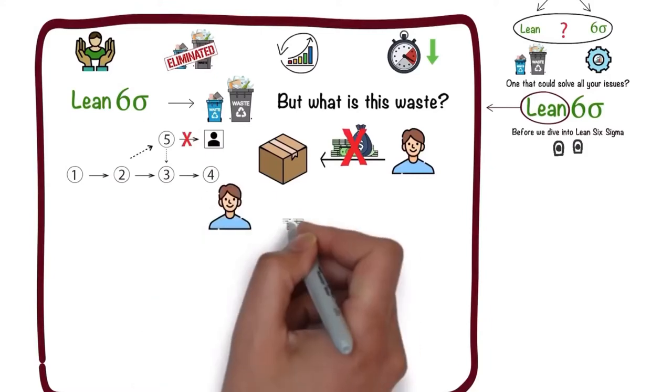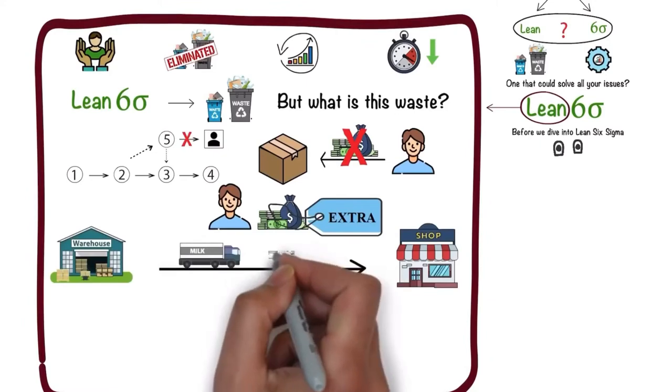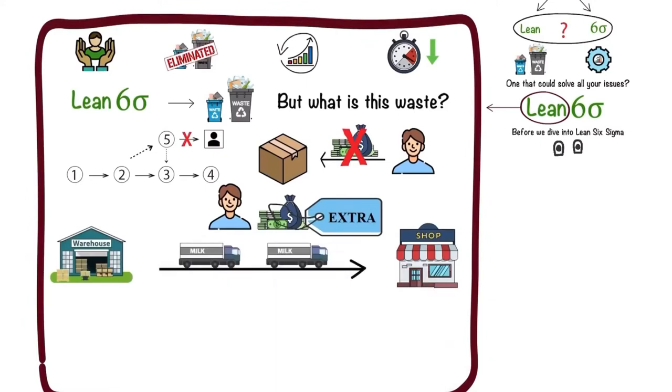Why would a consumer want to pay extra for the additional truck that was required to deliver milk to the supermarket just because the other one broke down? This waste can be divided into eight categories.